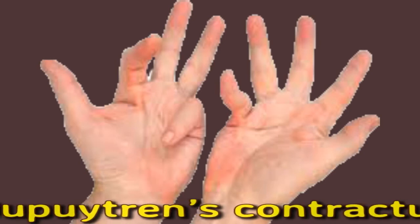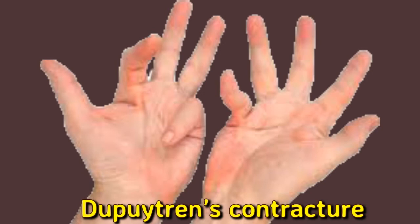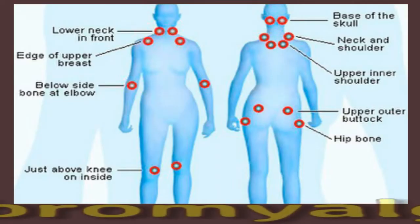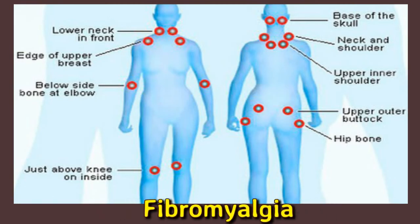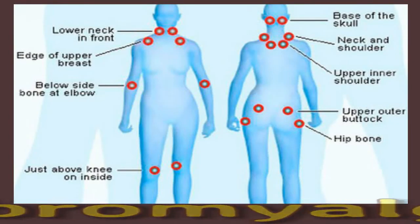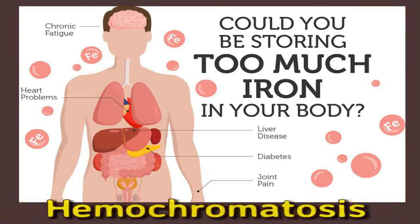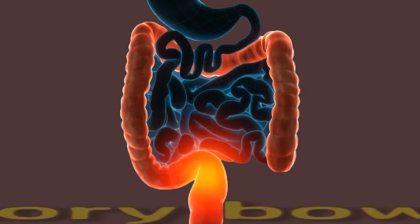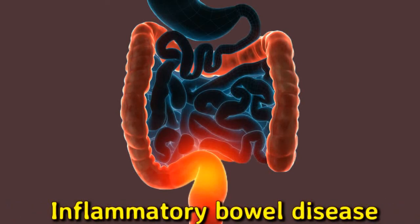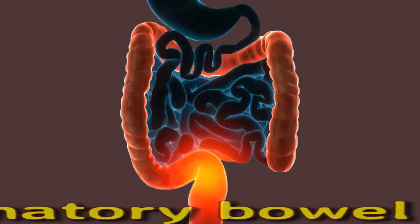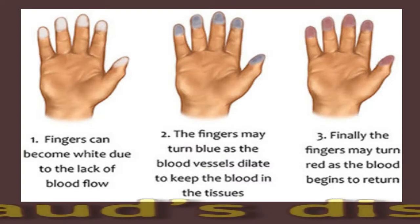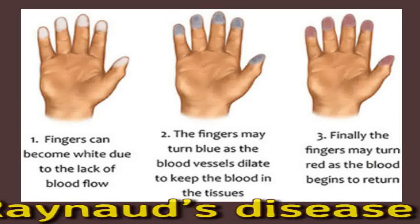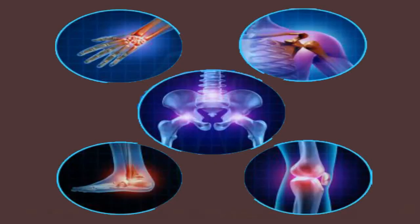These associated conditions include: Dupuytren's contracture, where the connective tissue in the hand contracts and becomes tighter, causing one or more of the person's fingers to curl into the palm. Fibromyalgia, a condition that affects the whole body causing pain and fatigue in numerous areas including the muscles. Hemochromatosis, where the body stores too much iron and the buildup can lead to polyarthritis developing. Inflammatory bowel disease (IBD) such as ulcerative colitis and Crohn's disease. Raynaud's disease, marked by poor blood circulation in the hands and feet, where fingers can go white at the ends or very red or purple.